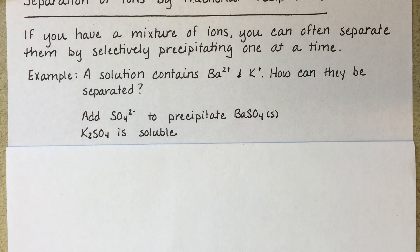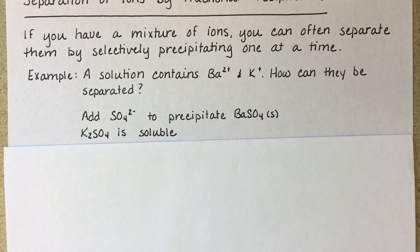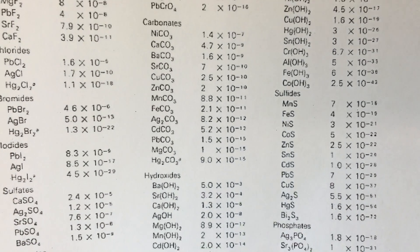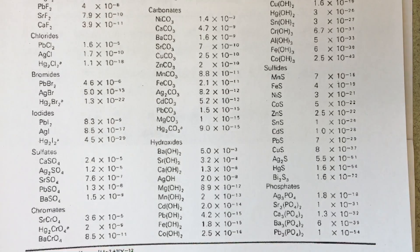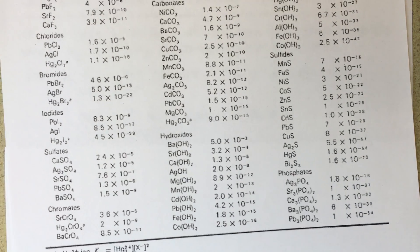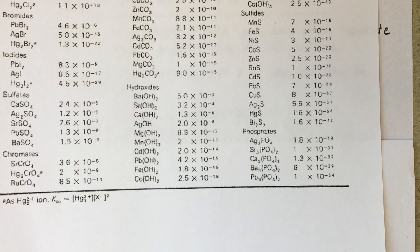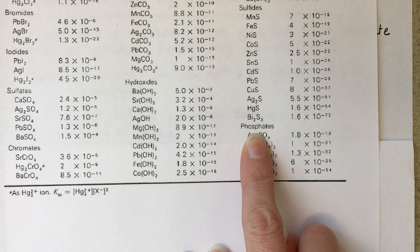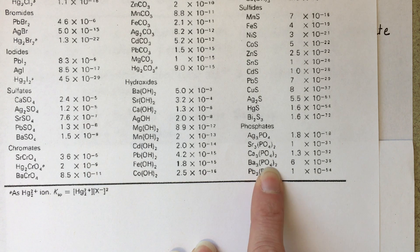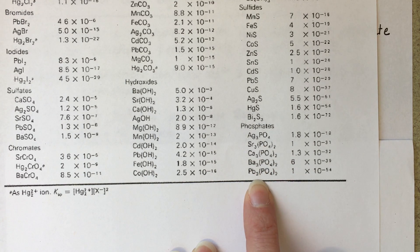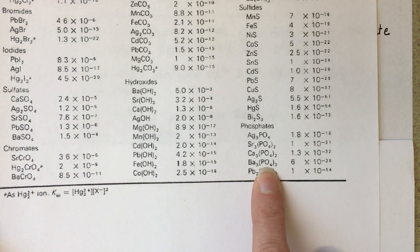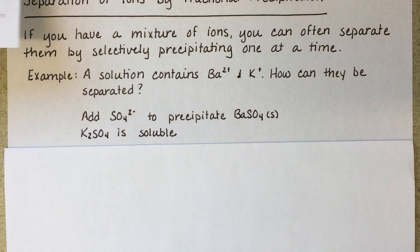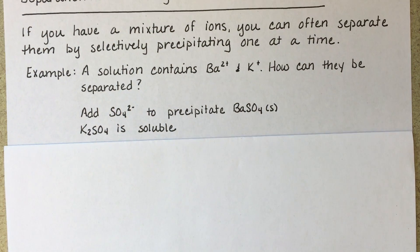We could also find the correct anion by consulting a table of KSP values. There are multiple anions that we could use for this separation. For example, if we look at our phosphates, you can see that barium phosphate is insoluble. It has a very small KSP. But potassium phosphate isn't on here, which means potassium phosphate is soluble. So you could also use a phosphate ion to separate the two from each other. There's more than one right answer to this problem.